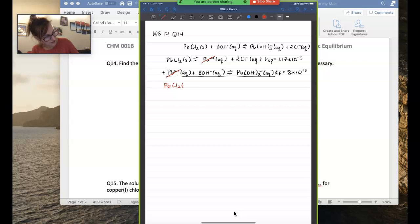So then we're left with the lead(II) chloride plus the three hydroxides to give us the complex ion plus the chlorides. And does that check out with the equation we're looking for? Yes it does.